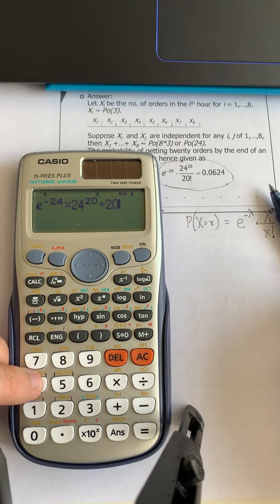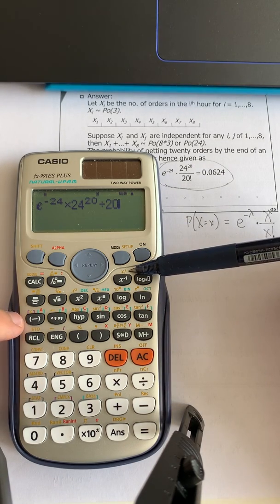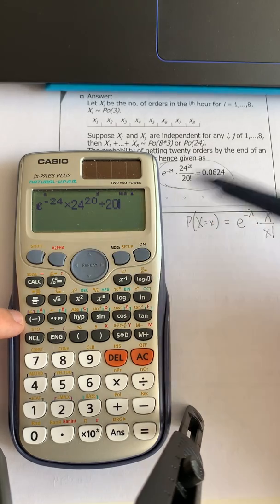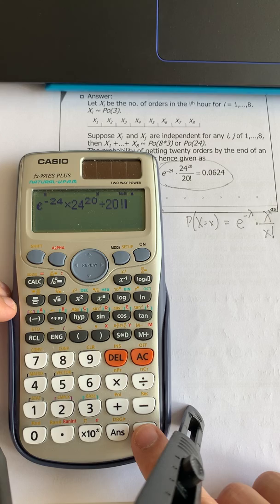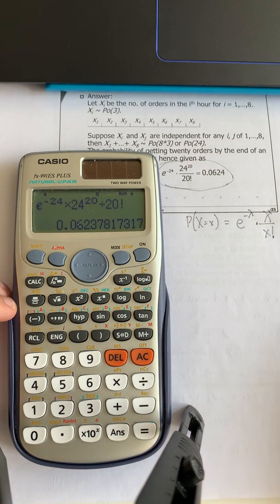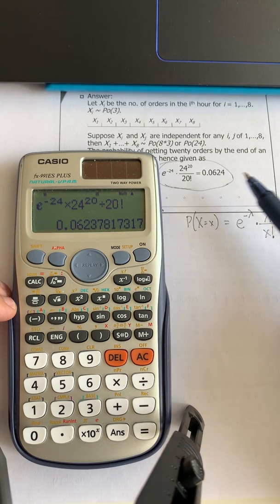So that 20 in the factorial which is right here is also in the yellow color. Therefore we need to use shift. Okay, shift 20 factorial and then you press enter and then you will have the answer. This is how we are going to input the formula of Poisson distributions into your calculator.